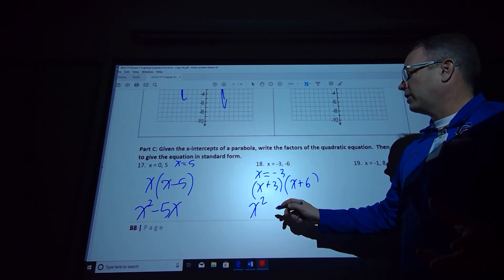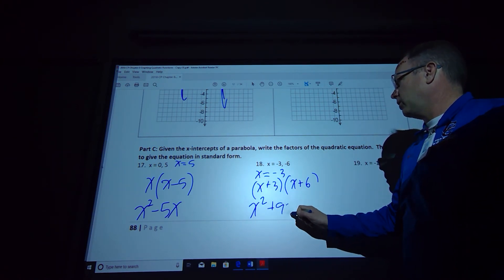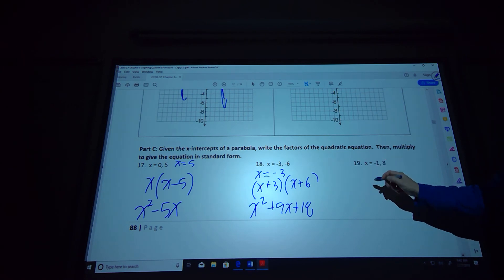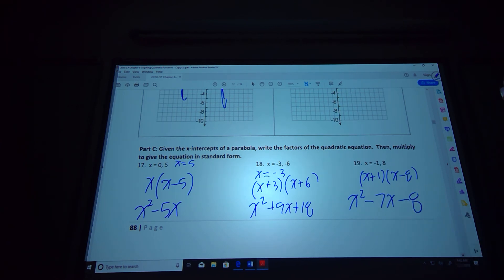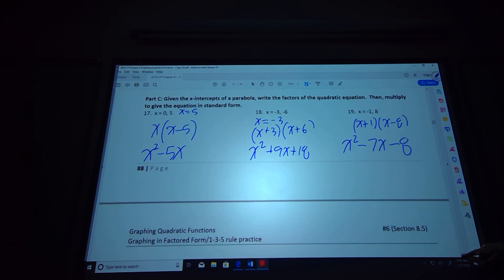Multiply it out, so you're going to get x squared. Your outside terms are 6x, inside is 3x, so I get 9x plus 18. Last one, so remember it's opposite, so it's going to be x plus 1, remember it's opposite, so it's going to be x minus 8. And then multiply together, so you get x squared minus 8x plus 1x is negative 7x minus 8. And so those are how you do those problems, you're just multiplying them back together. And that should take us to the end.